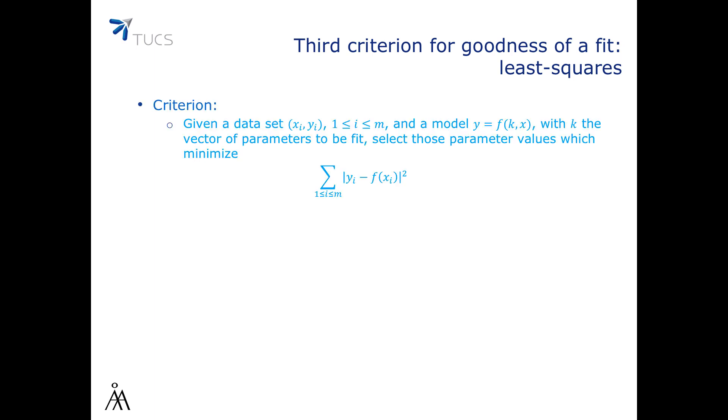The fitness criterion most widely used in practice is least squares. It is closely related to minimizing the sum of absolute deviations but removes the problem that derivatives might not be everywhere continuous. Given a dataset x, y and a model y = f(x, k), we select those parameter values which minimize the sum of (y minus f of x) squared.